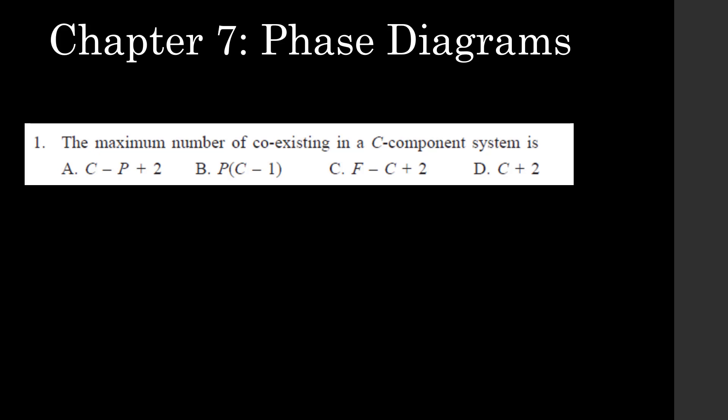Hello guys, we will understand the solutions of Chapter 7: Phase Diagrams by V Raghavan. The first question is: the maximum number of coexisting in a C-component system is. For this question, it seems there